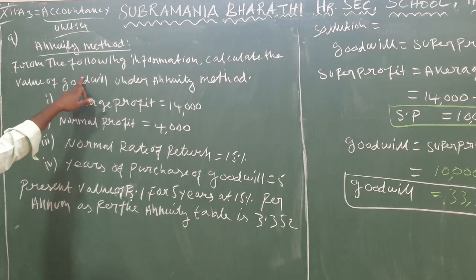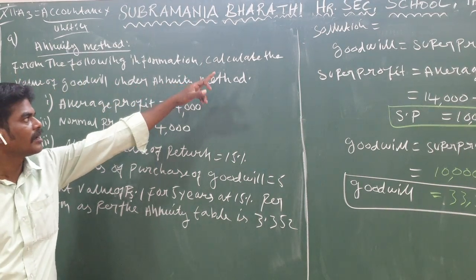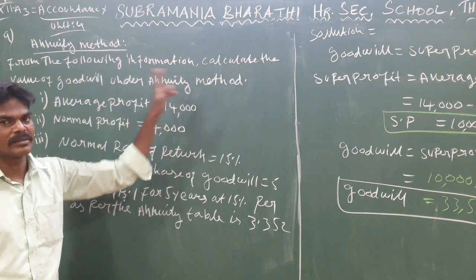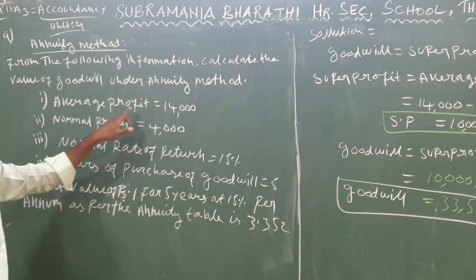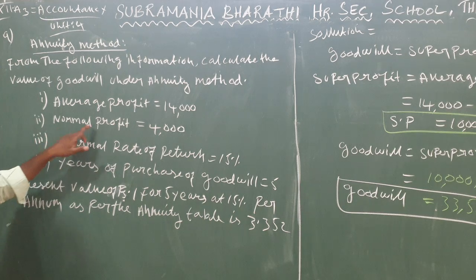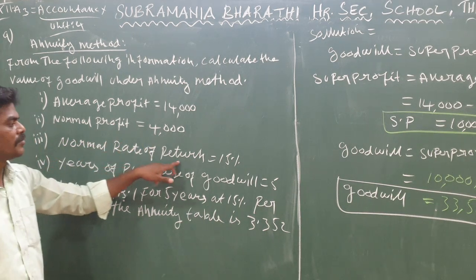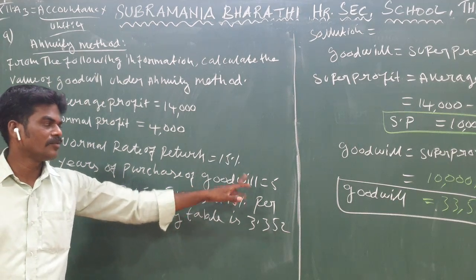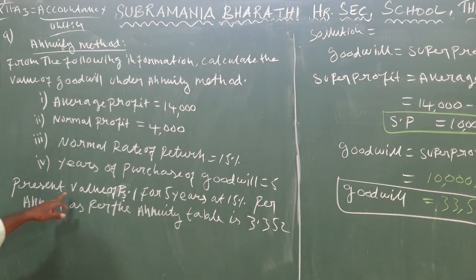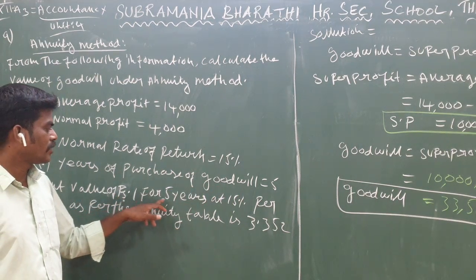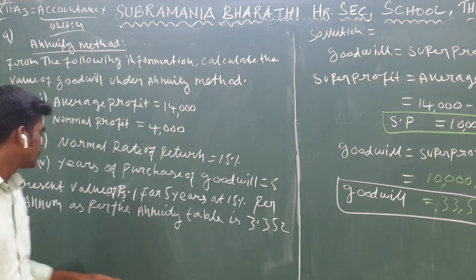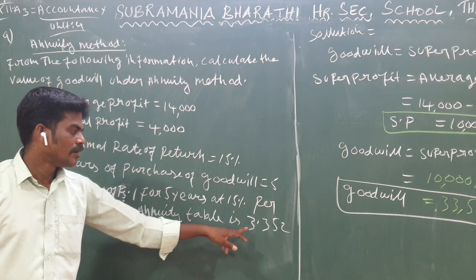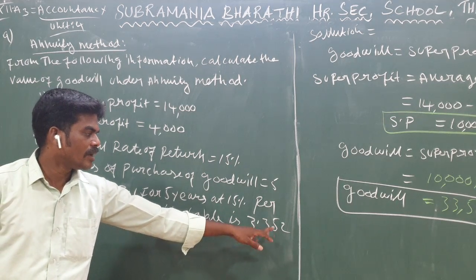From the following information, calculate the value of goodwill under the annuity method. Average profit: $14,000. Normal profit: $4,000. Normal rate of return: 15%. Years of purchase of goodwill: 5 years. Present value of $1 for 5 years at 15% per annum, as per the annuity table, is 3.352.